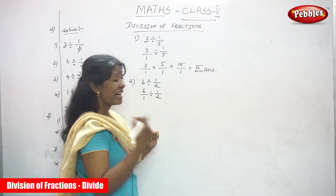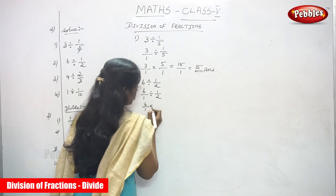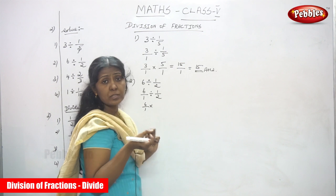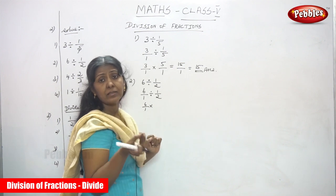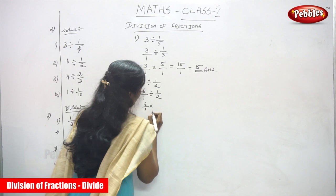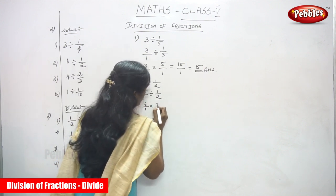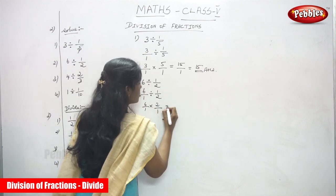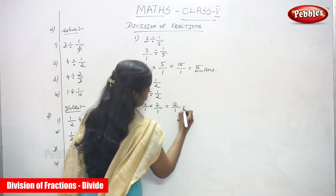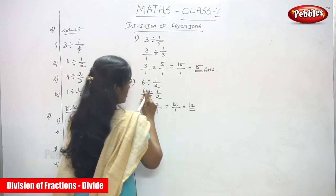Next: 6 divided by 1, divided by 1 by 2. 1 by 2 is the divisor. Find the reciprocal of the divisor — the divisor becomes its reciprocal, so 2 divided by 1. So 6 into 2 equals 12, and 1 into 1 equals 1, giving 12 divided by 1 equals 12.